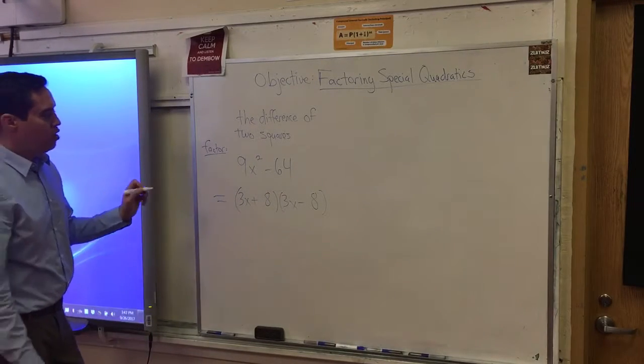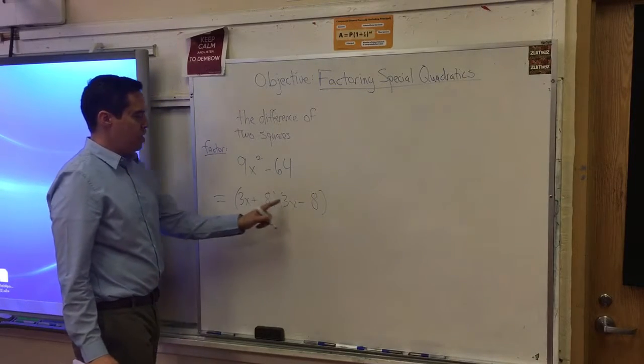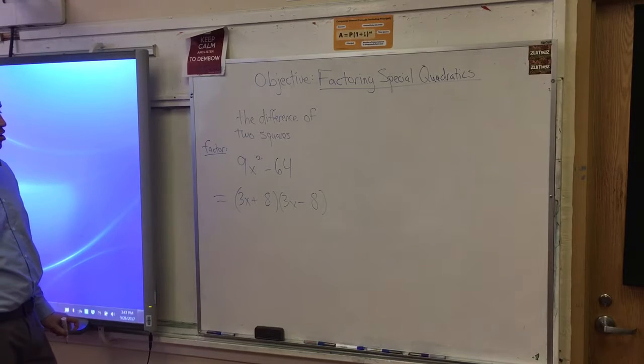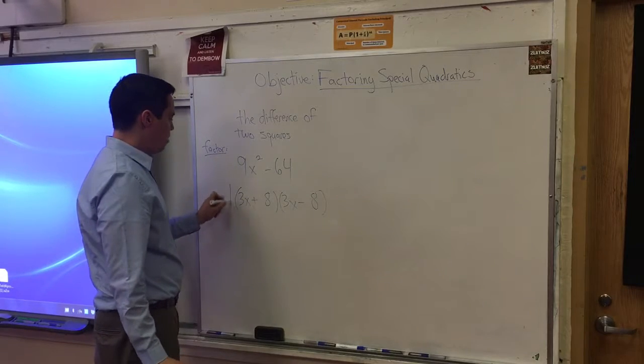That's just the way it is. How do I know this? Because there's no x to the first term. When I foil this guy out, I'm not going to get an x to the first term. It will cancel. This is the final answer.